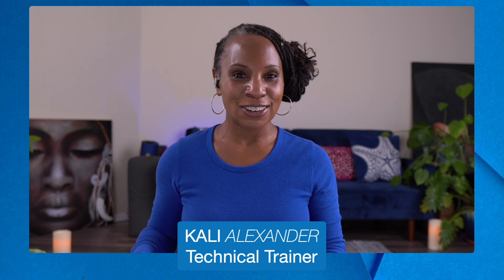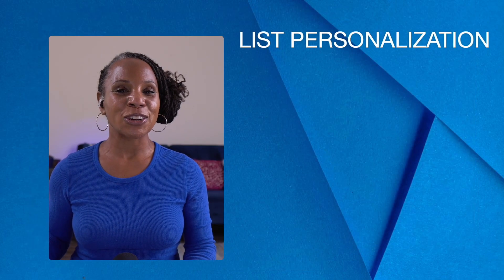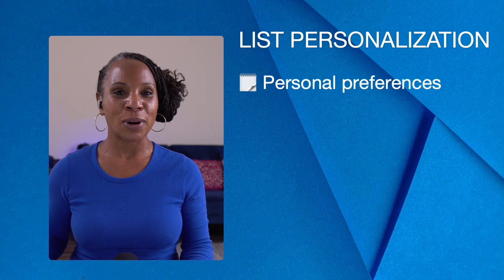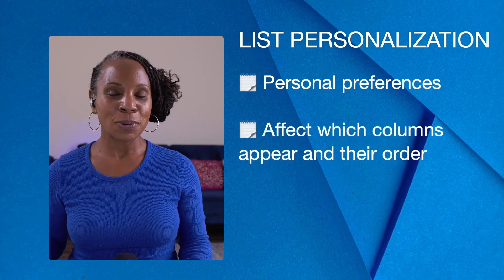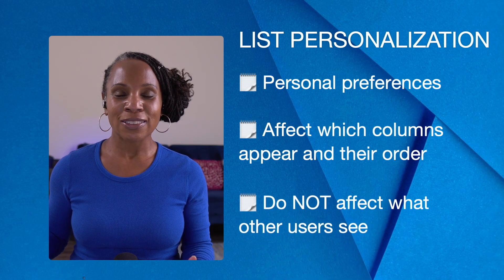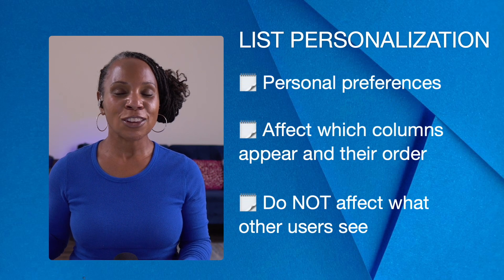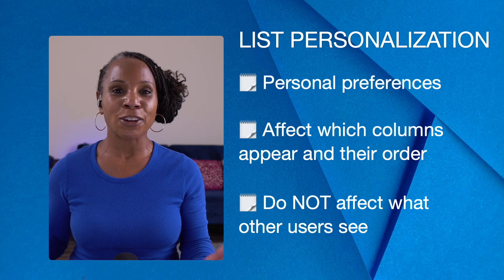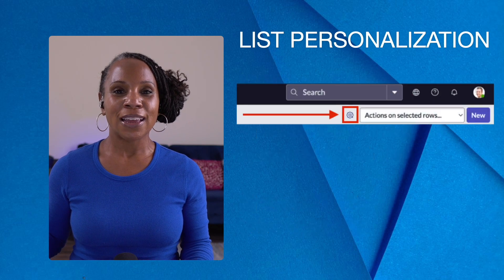You can customize your list view in ServiceNow so you can see exactly the information that matters to you most. I'll show you exactly how to do so using list personalization. List personalization is about personalizing your list based on your own preferences — the columns that appear and the order in which those columns appear. Keep in mind that this view is customized for you only; no one else in the organization is affected.